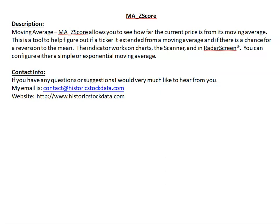I'm going to give you a video to talk about the moving average z-score. It's basically an indicator that tells you how far a moving average has moved from the mean, using standard deviations. This is a tool that works on your charts, it'll work on the scanner, and it'll work in radar screen. You can configure either a simple or an exponential moving average.